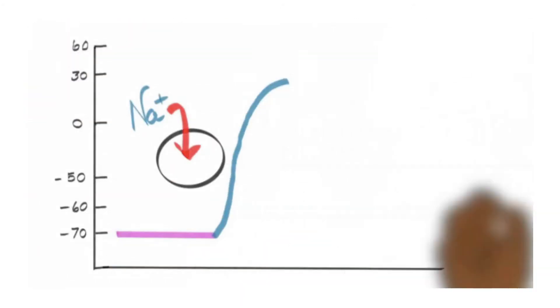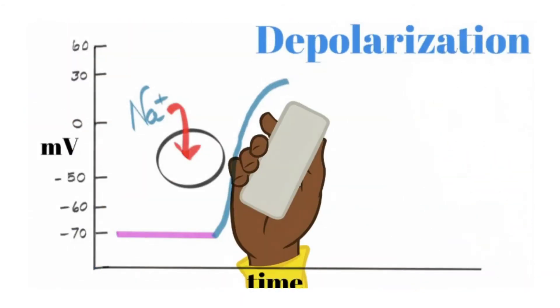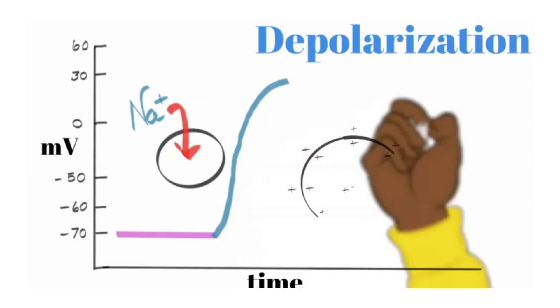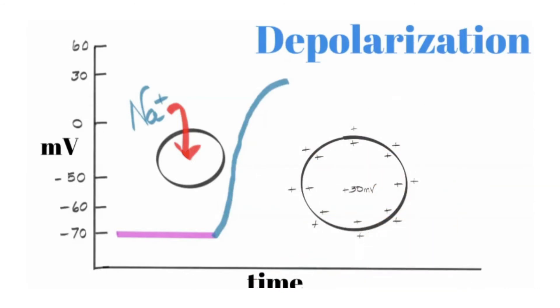When a cell becomes excited, it's deviating from that resting state. I will argue if a cell hyperpolarizes, it is deviating from its resting state and is actually becoming excited. But generally speaking, when we talk about an excited cell, it's becoming less negative or up to the trajectory of being positive.